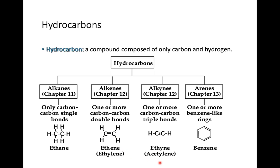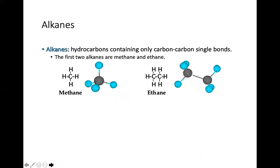Ethyne has triple bonds and hydrogen is lessened to two because of the triple bonds. Lastly, arenes — examples are benzene rings. These are cyclic compounds, and arenes can be made up of two or more benzene rings. Now let's go to alkanes. Alkanes are hydrocarbons containing only carbon-carbon single bonds.